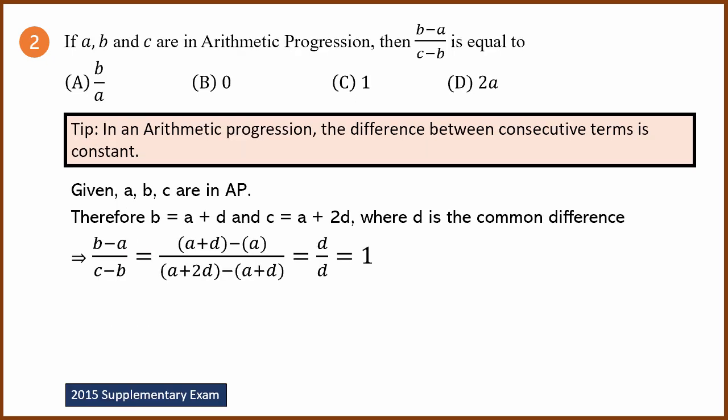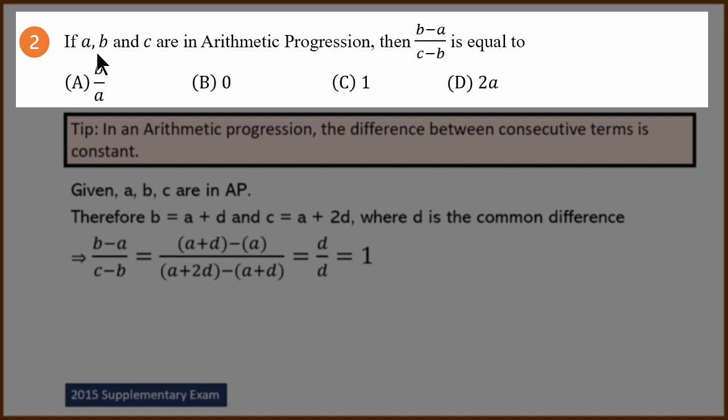Next question. If a, b, c are in arithmetic progression, what is b minus a divided by c minus b? This is from the 2015 Supplementary Exam. The choices are b by a, 0, 1, and 2a.